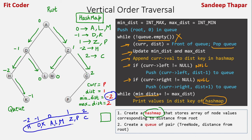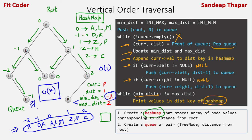We maintained the minimum distance and maximum distance variables to print the hash map values. We could have used an ordered map, but that would have increased the complexity. Instead we used a hash map with O(1) insertion cost, and printed the contents from left to right using those two variables. The time complexity of this traversal is O(n). Now let's look at the implementation.